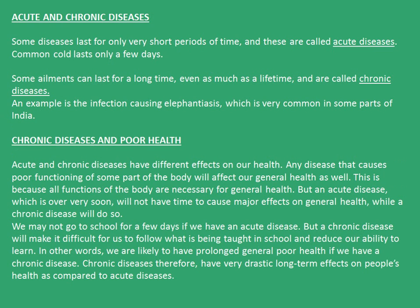Now let's see what acute and chronic diseases are. Some diseases last for only a few days, that is a very short period of time, and these are called acute diseases. The common cold lasts for just a few days and hence comes under acute diseases. Some diseases can last for a long time, even as much as a lifetime, and hence are called chronic diseases. An example is the infection causing elephantiasis, which is very common in some parts of India.